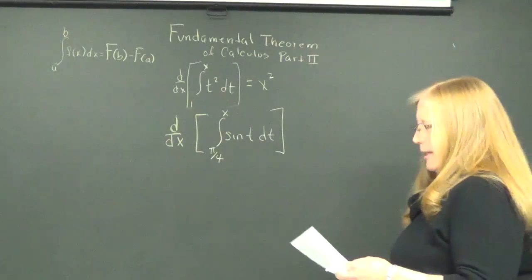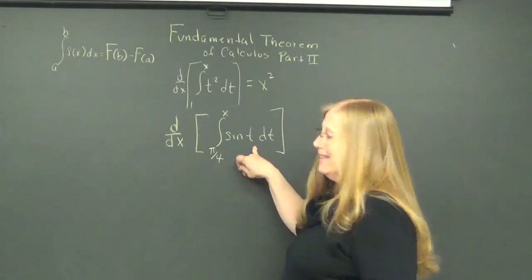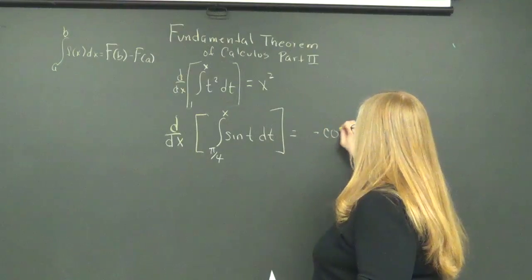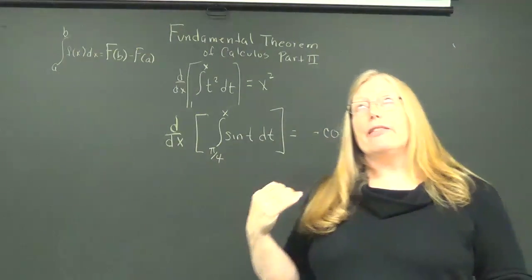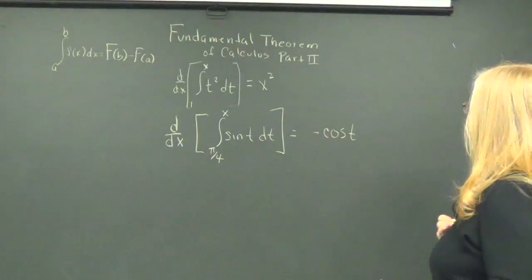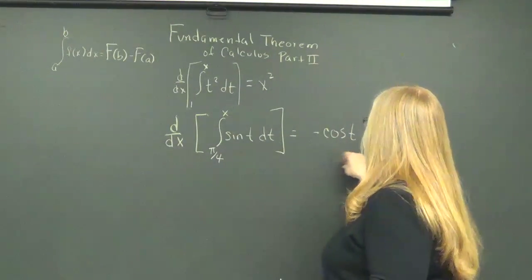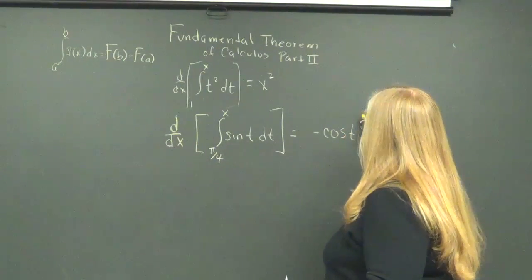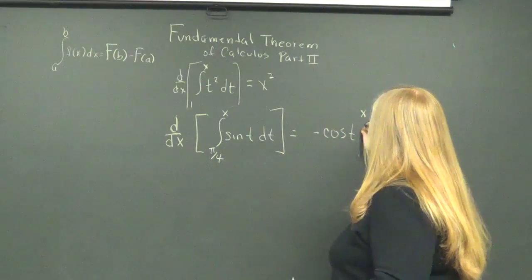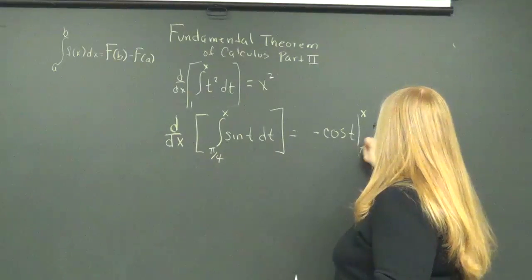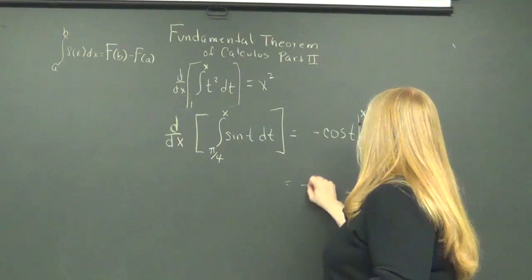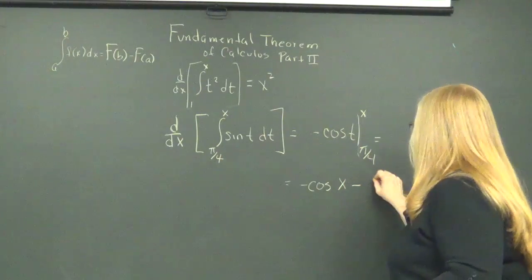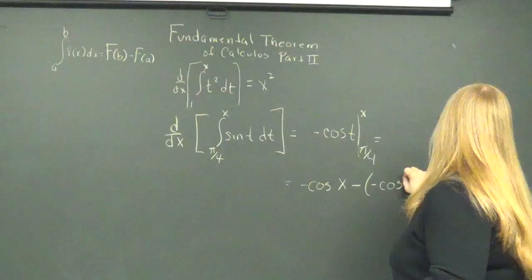So, what is the integral of sine x, I mean sine t? The integral of sine t is negative cosine t, because the derivative of that will get me back to that. Evaluate it at pi. We're going to evaluate the upper and the lower. So, we're going to get negative cosine x minus a minus cosine pi over 4.